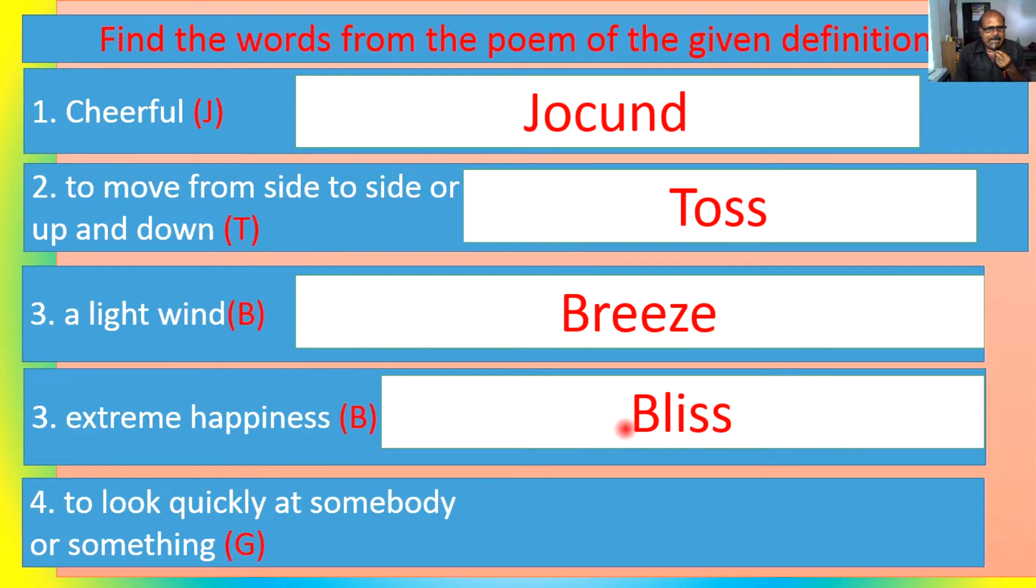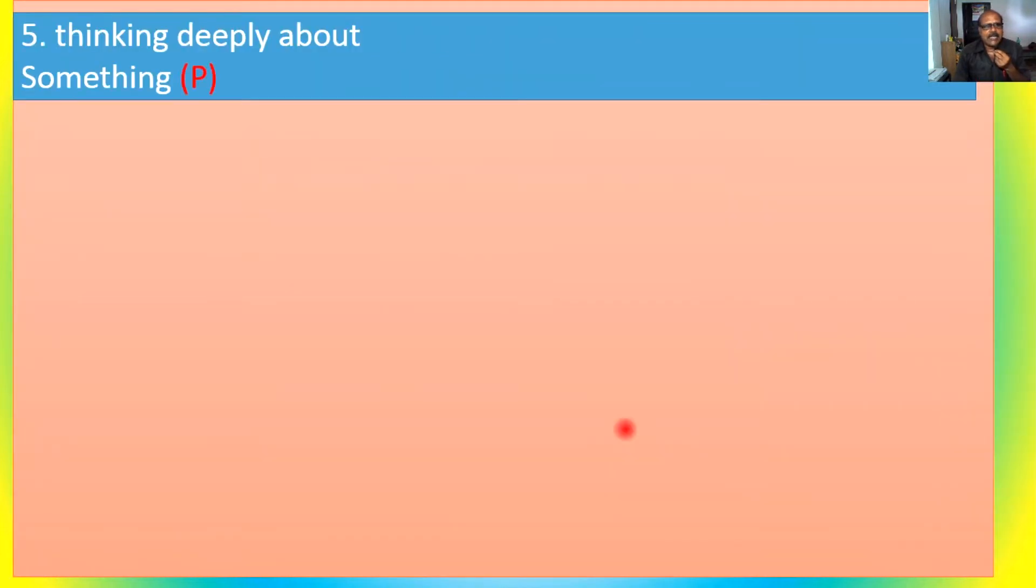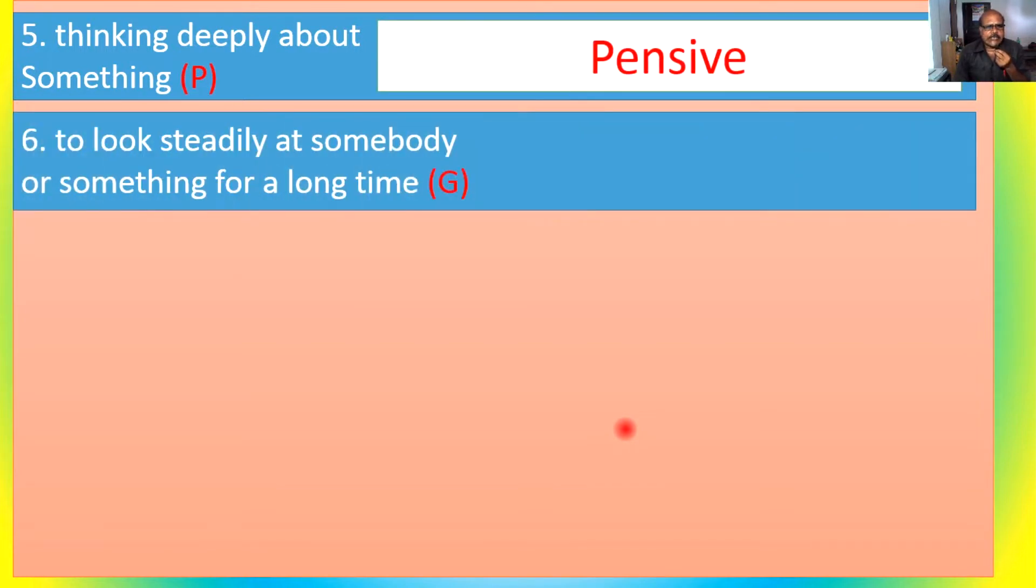Now, to look quickly at somebody or something that starts from G - G-L-A-N-C-E, glance. Thinking deeply about something that starts from P - pensive. And to look steadily at somebody or something for a long time, not short one, not glance, but yes, gaze.